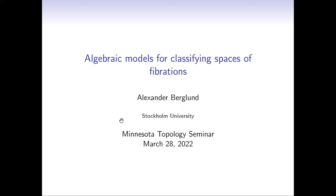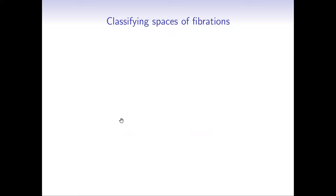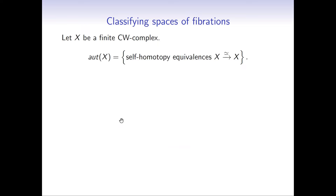Let me begin by defining the main object of study. What are these classifying spaces? I'll be focusing on finite CW complexes and the topological monoid of self-homotopy equivalences from X to itself. It is a group-like topological monoid, and it has a classifying space. That classifying space classifies fibrations with fiber X.